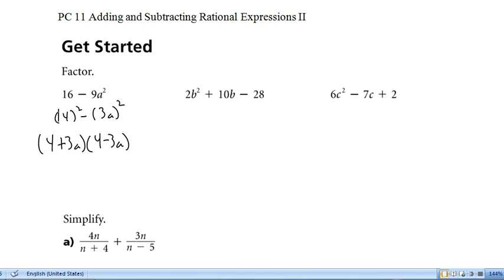In our second example, all of the parts are divisible by 2, so we can factor a 2 out. That gives us 2 brackets b squared plus 5b minus 14. We need 2 numbers that add to 5, multiply to negative 14. That's 7 and negative 2. So we end up with 2 times b plus 7, b minus 2.